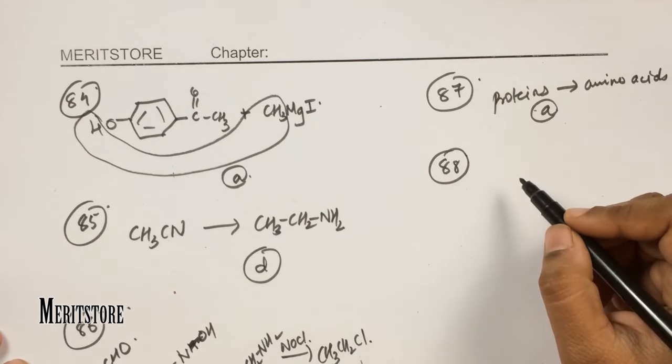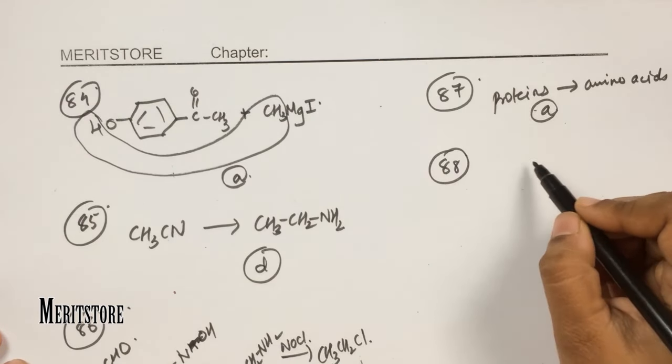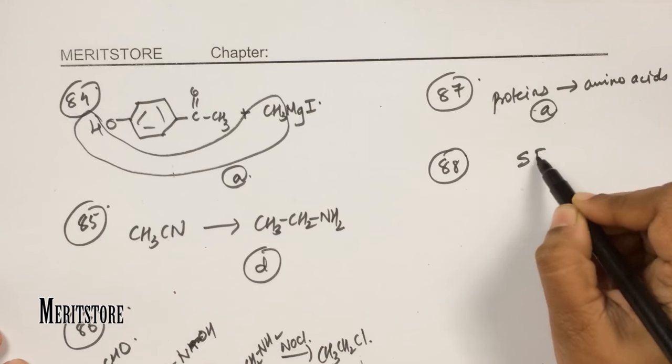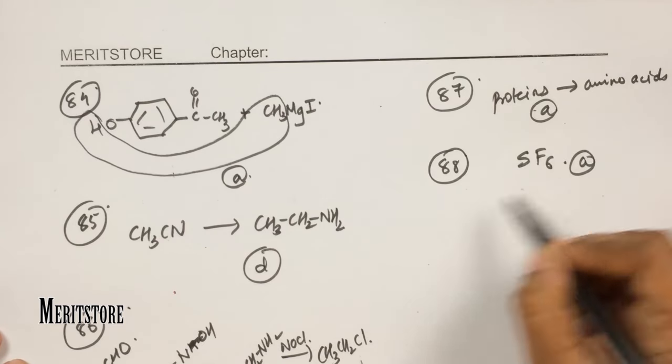Question number 88: which substance is used in vulcanization of rubber? Sulfur is used in vulcanization. The sulfur-related compound given is SF₆, which is option A.